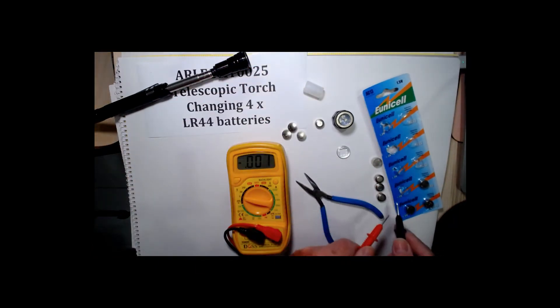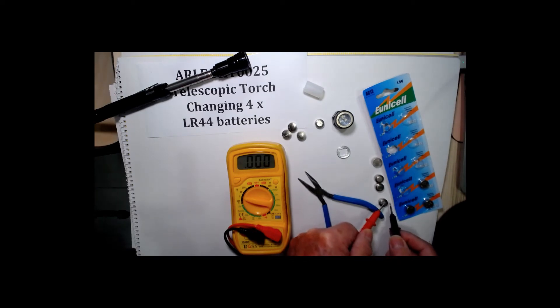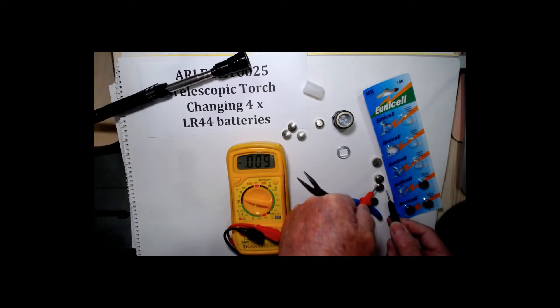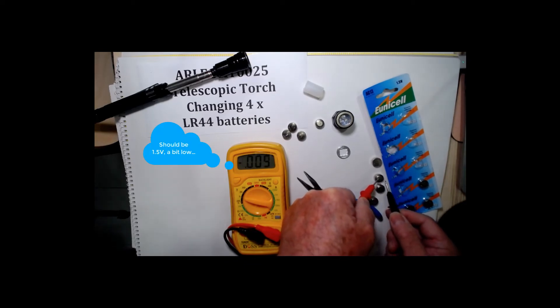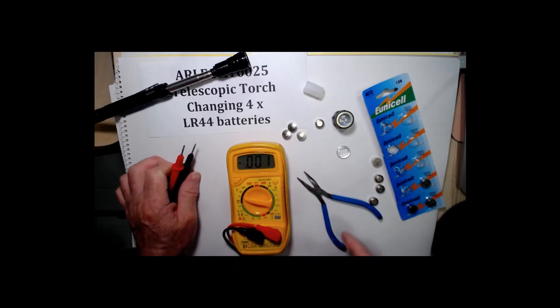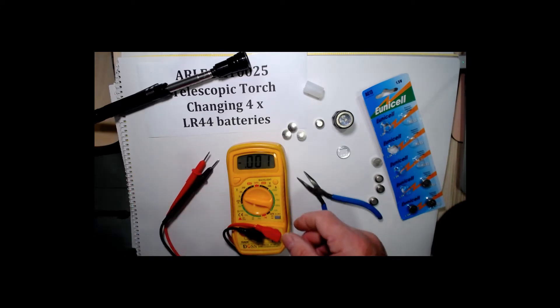And these are the new ones. Should be about 1.5. I'll get a good connection. 1.423. They're straight out of the packet so hopefully they'll be okay.